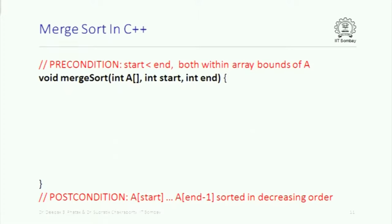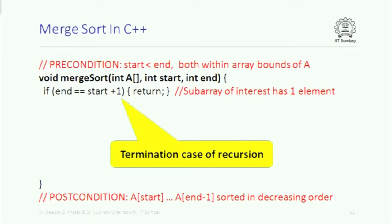How does merge sort look? As a precondition, we require start to be less than N and both to be within the array bounds — from start to N minus 1 is the part of interest. As a postcondition, we want the part from start to N minus 1 to be sorted in decreasing order. The first thing we check is the termination condition: if the array has just one element — if N minus 1 equals start, or N equals start plus 1 — then it is already sorted. Otherwise, we calculate the midpoint as start plus N over 2, then sort the two parts.